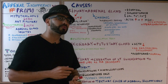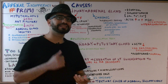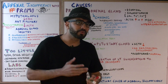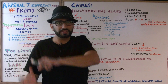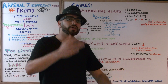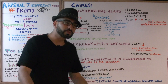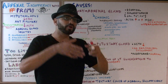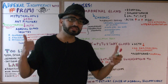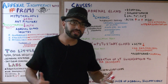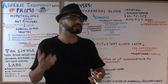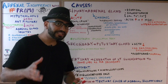Aldosterone works at the kidney — specifically the DCT (distal convoluted tubule) and the collecting duct — where it reabsorbs sodium and excretes potassium and hydrogen. So if aldosterone is not being produced, the patient will have low sodium (hyponatremia), elevated potassium (hyperkalemia), and too many hydrogen ions, resulting in metabolic acidosis.